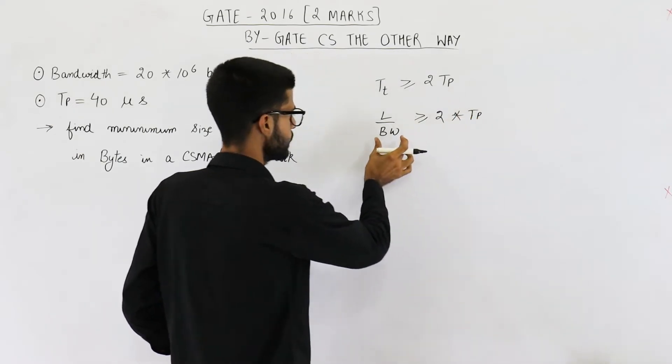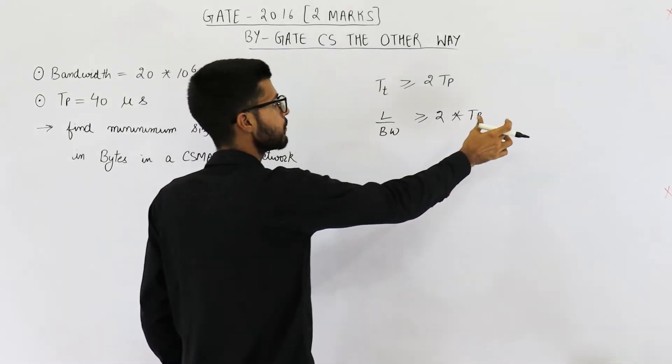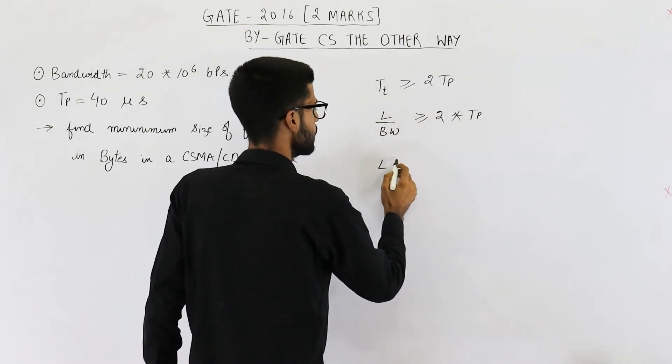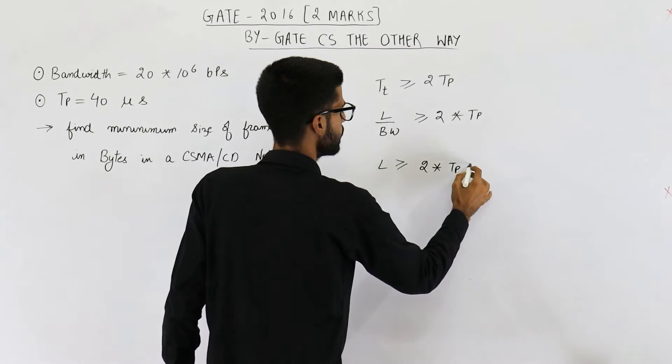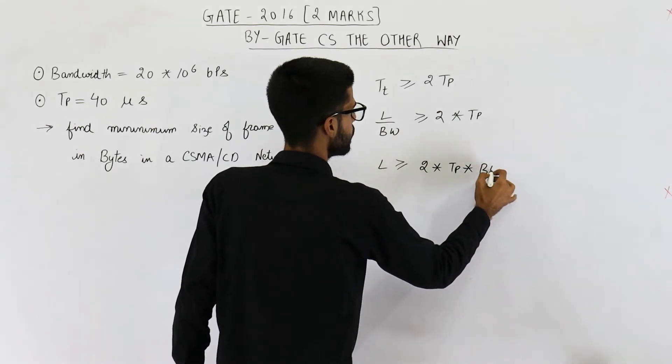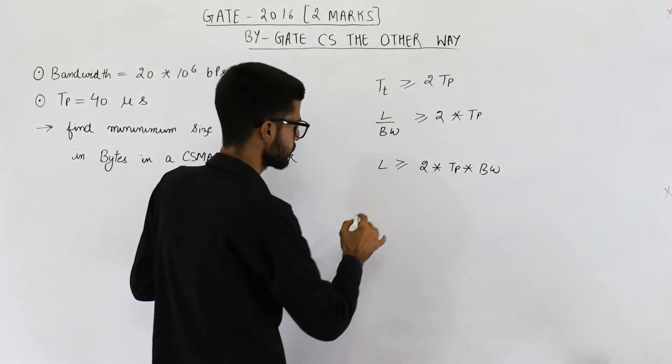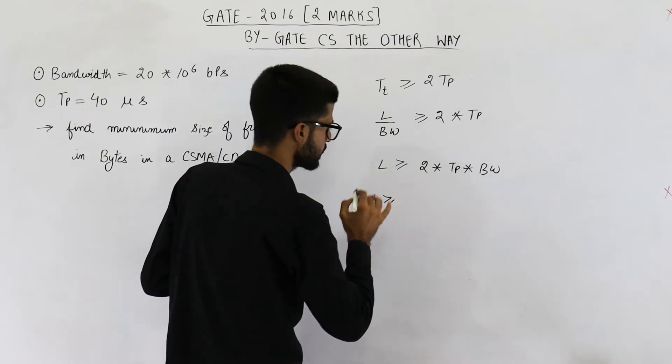Now you can see this bandwidth will be multiplied by this. So L is greater than or equal to 2 into TP into bandwidth. Just substitute the values. Length of packet is greater than or equal to...